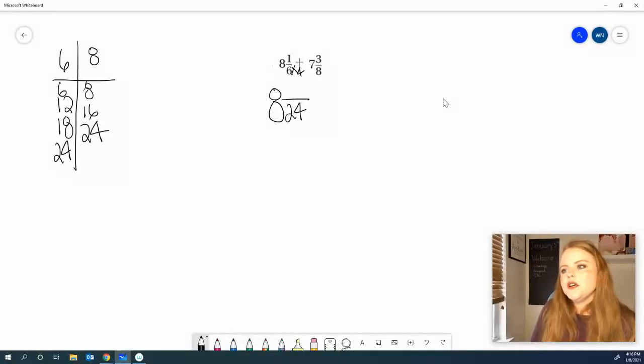Now, let's make our common denominator 24. In order to get there, I multiply that 6 times 4. So, I'm going to multiply the 1 times 4 as well. Now, I get 8 and 4/24, plus 7. 24. 8 times 3 got me 24. So, 3 times 3 will get me 9. So, we have 8 and 4/24, plus 7 and 9/24. So, let's add those fractions first.